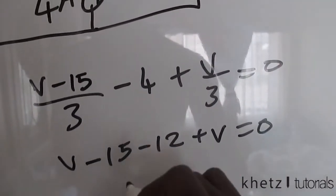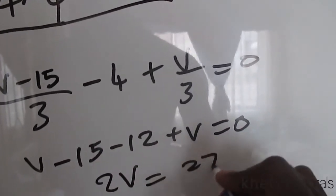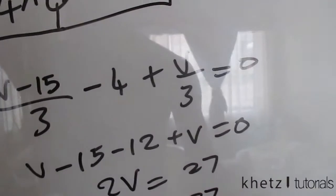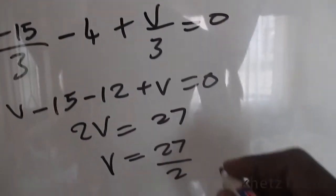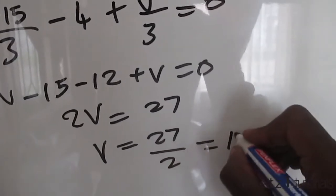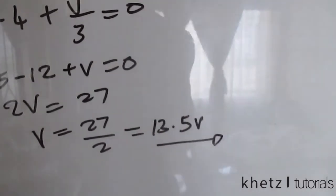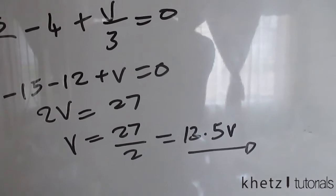Then we have, adding these two we have 2V is equals to 27. So V is equals to 27 divided by 2. We have 27 divided by 2 which is essentially equals to 13.5, because 13 times 2 is 26 and adding 2 halves gives you 1 which is 27.